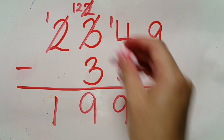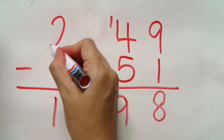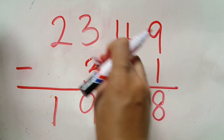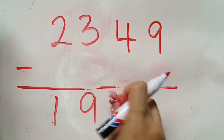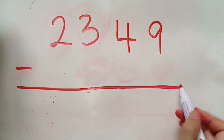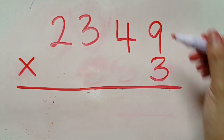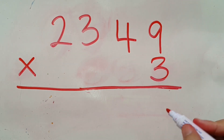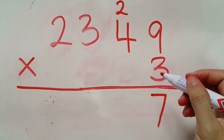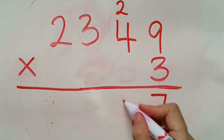The next one will be two thousand three hundred and forty-nine multiplied by three. Nine multiplied by three becomes twenty-seven: seven at the bottom, two carried to the top. Four times three will be twelve, plus two on top gives fourteen: four at the bottom, one carried to the top.